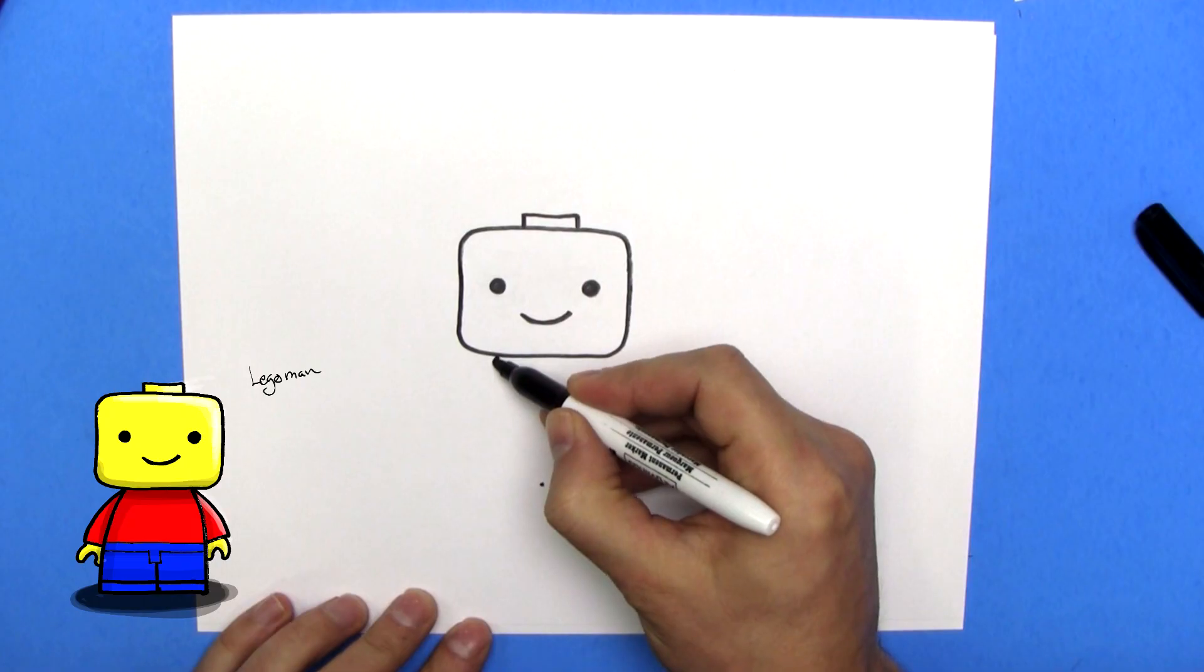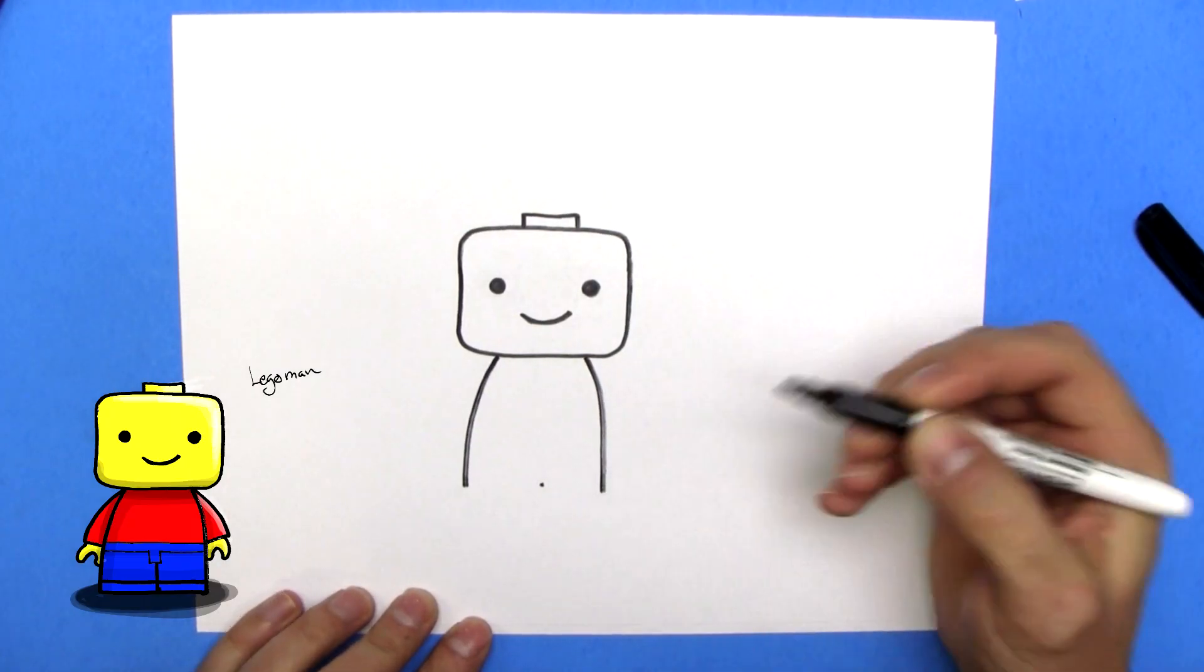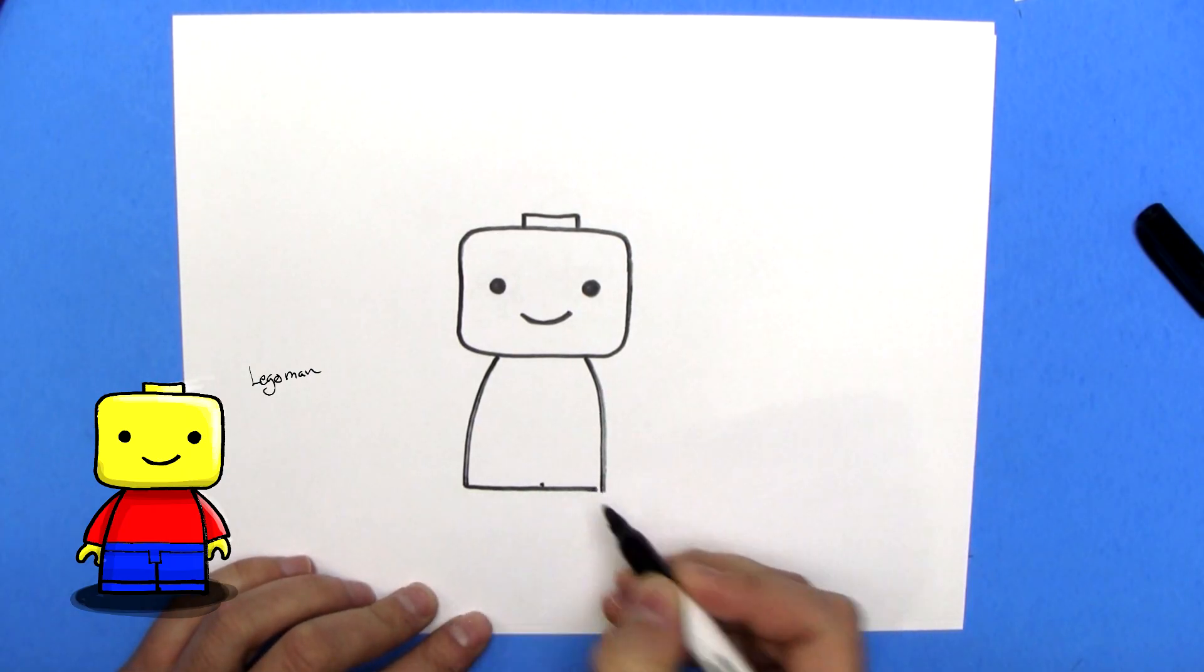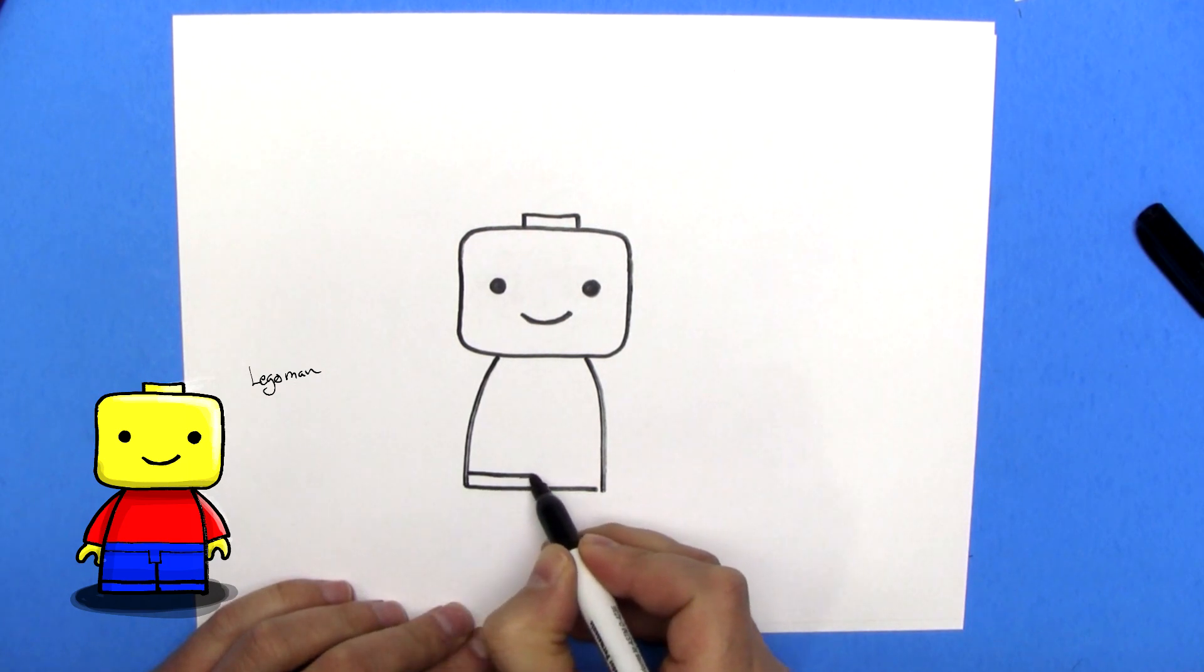So we'll do this. We'll start here and we'll swoop out. We'll start here, we'll swoop out. We'll draw a line across the bottom. And we'll draw another line just above that. That's the Lego Man's feet.